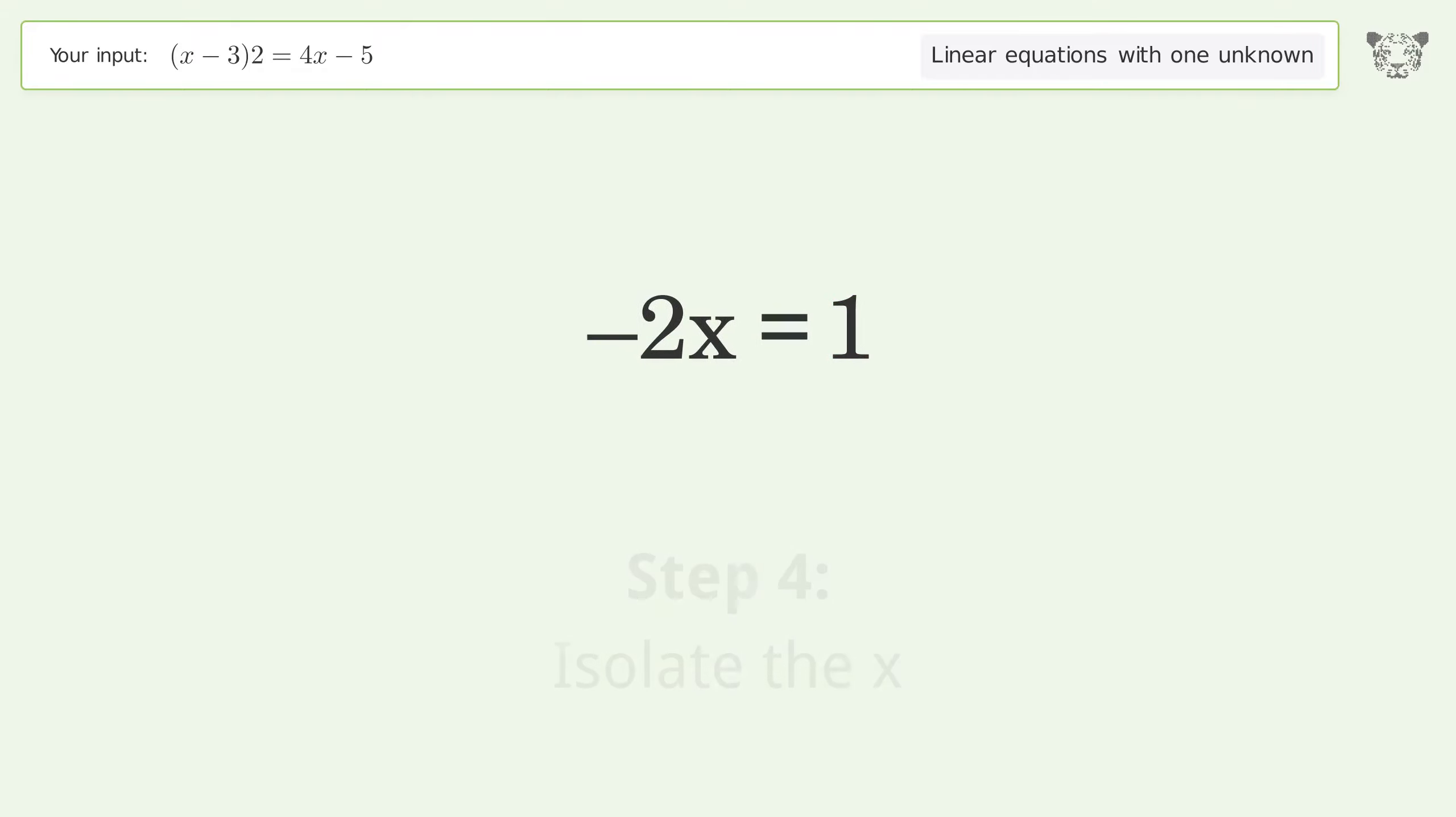Isolate the x. Divide both sides by negative 2. Cancel out the negatives.